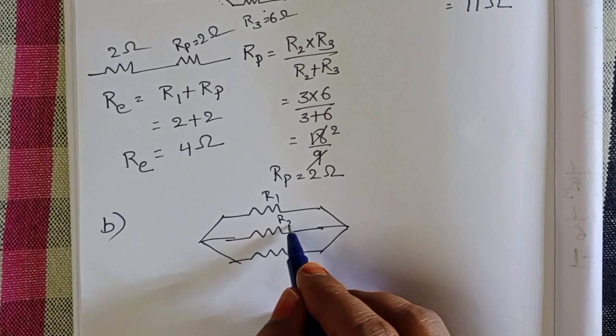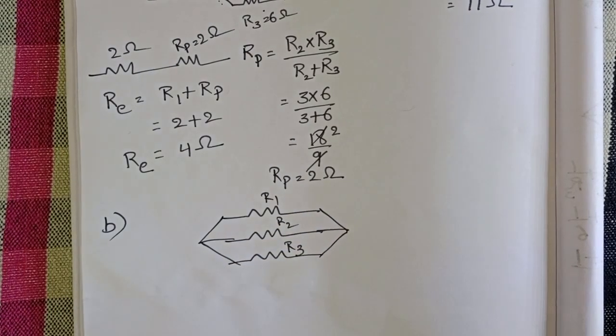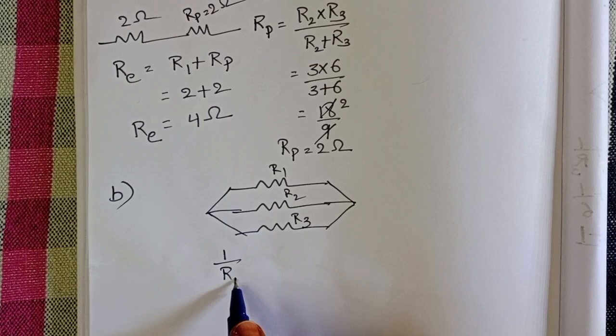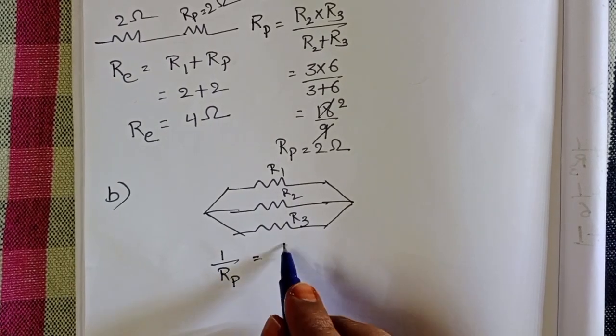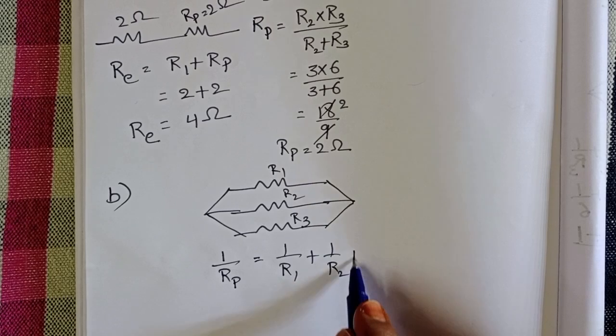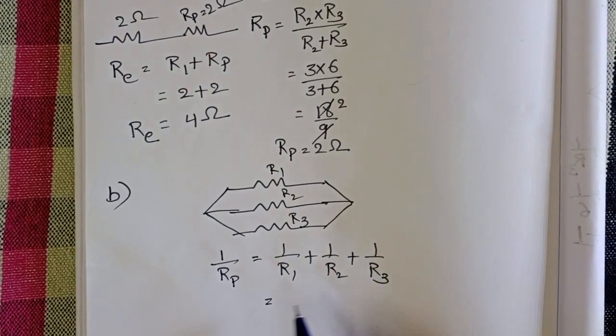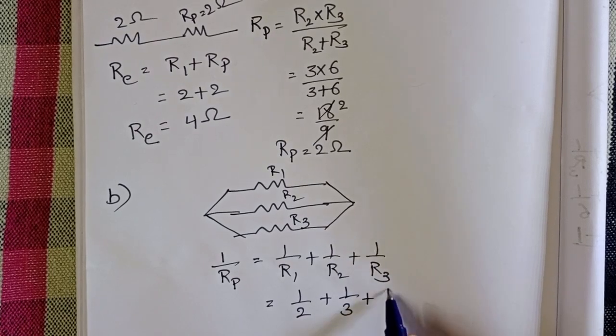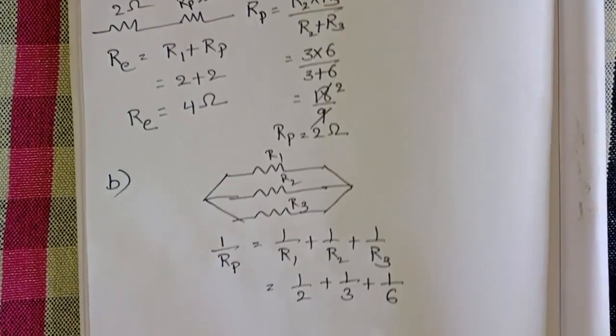R1, R2 and R3 these three are connected in parallel. Then, reciprocal of the equivalent resistance is 1/Rp = 1/R1 + 1/R2 + 1/R3.